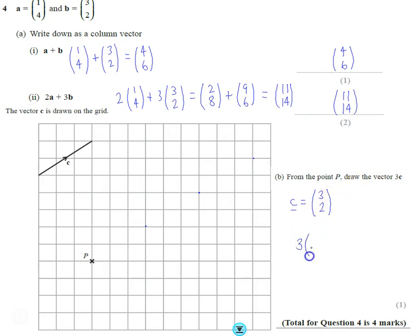3 lots of (3, 2): 3 times 3 is 9, 3 times 2 is 6, giving us (9, 6).